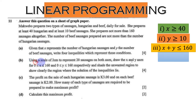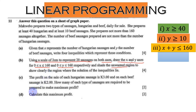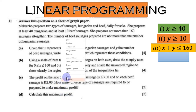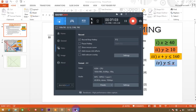Question b says: using a scale of 2 centimeters to represent 20 sausages on both axes, draw the x and y axes for 0 ≤ x ≤ 160 and 0 ≤ y ≤ 160 respectively, and shade the unwanted region to show clearly the region where the solution of inequalities lies.